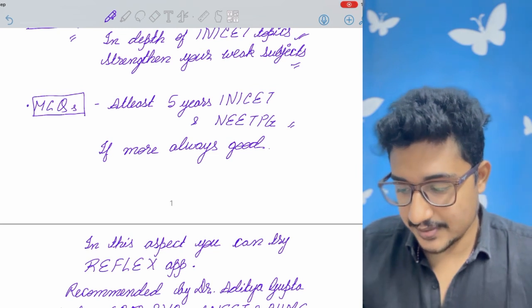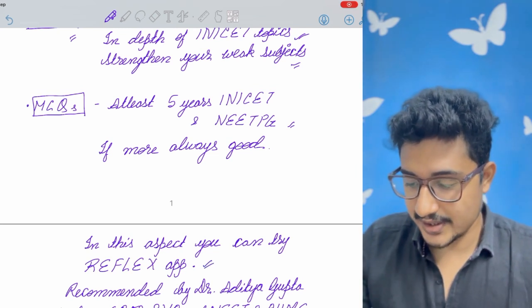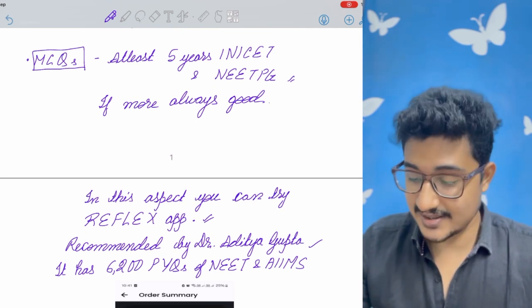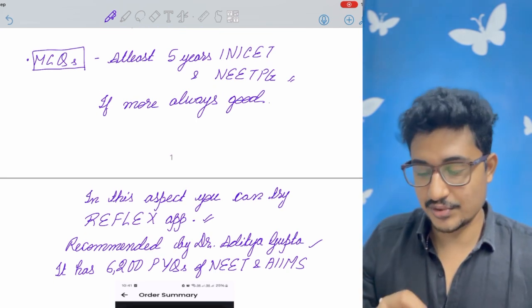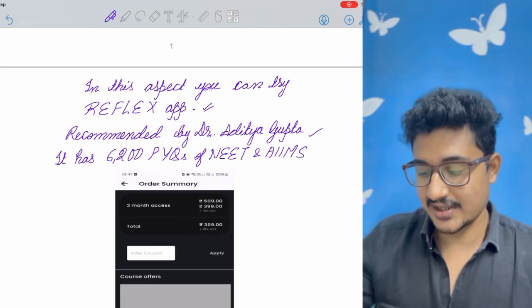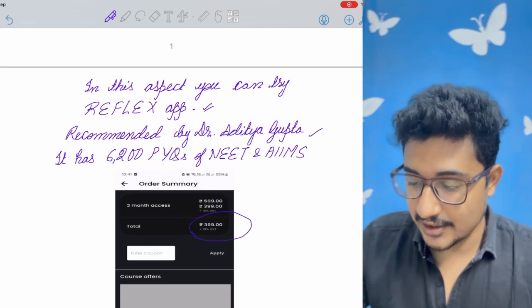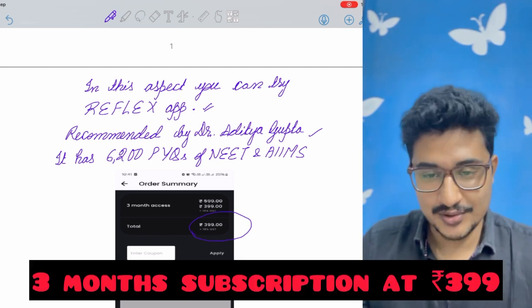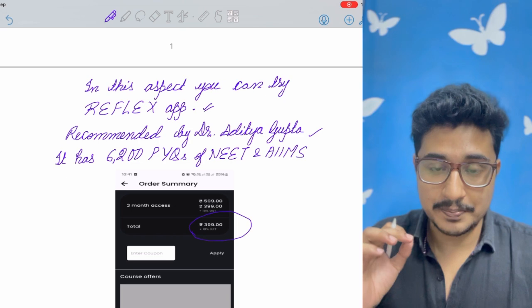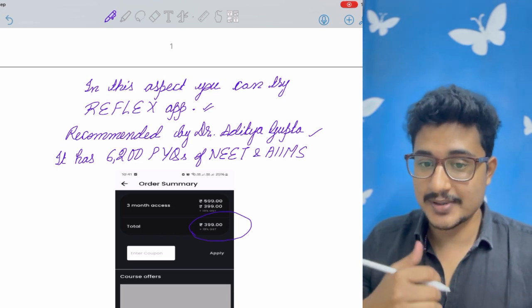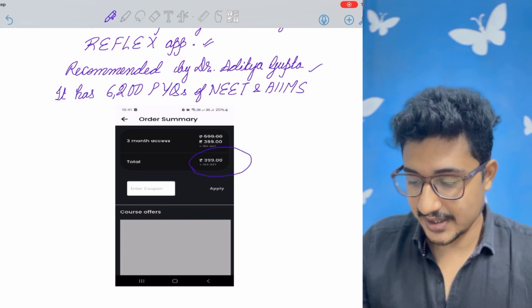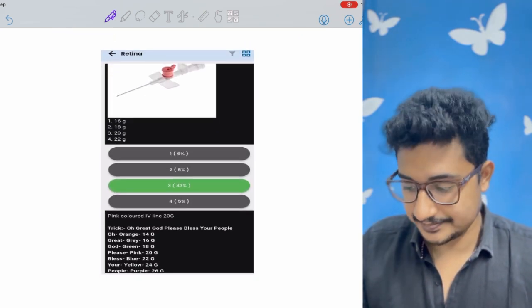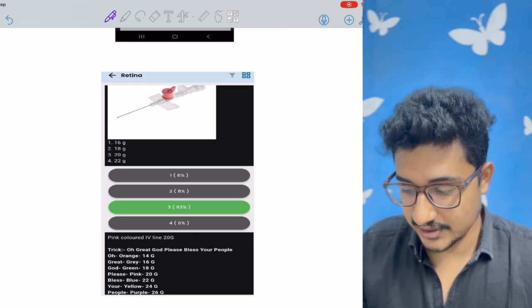So if we have to solve the PYQ, then there is the PYQ solve app, Reflex app. And it is recommended by Dr. Aditya Gupta himself. It has 6200 PYQs, last 10 years of NEET-PG and AIIMS question, and this is given only at a nominal rate of 399. It will probably not remain. I want to say that there will not be any errors.